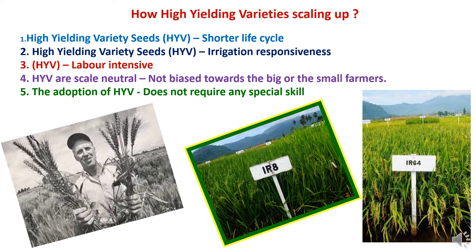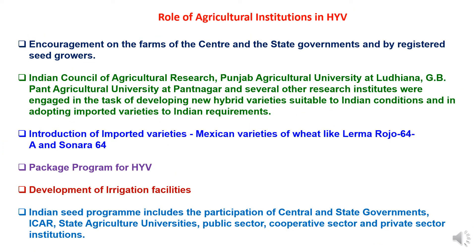These high yielding varieties are well acquainted to farmers and are increasing productivity and playing an important role in food production. Agricultural institutions played an important role in the development of high yielding varieties. Production of improved seeds was increased on the farms of central and state governments and by registered seed growers. The Indian Council of Agriculture Research, Punjab Agriculture University at Ludhiana, G.B. Pant Agricultural University at Pantnagar, and several other research institutes were engaged in developing new hybrid varieties suitable to Indian conditions. In selected regions, Mexican varieties of wheat like Lerma Rojo 64A and Sonora 64A were directly introduced in the initial period, with considerable attention later given to hybridization of Mexican material with Indian varieties.